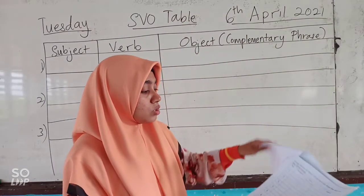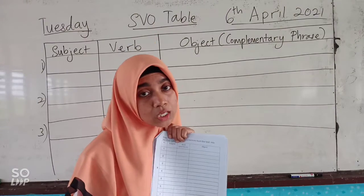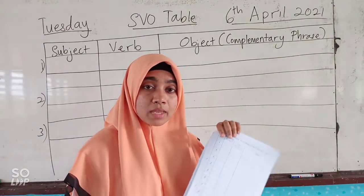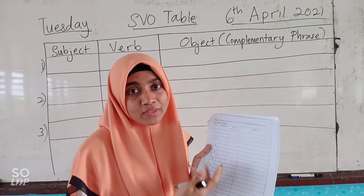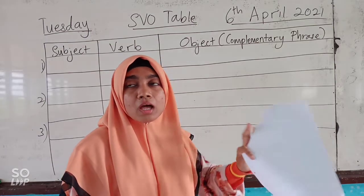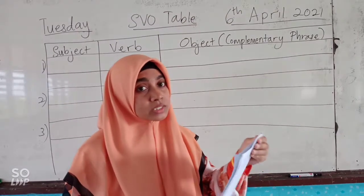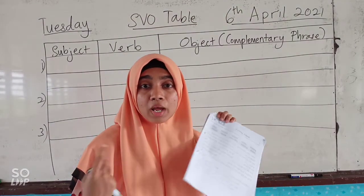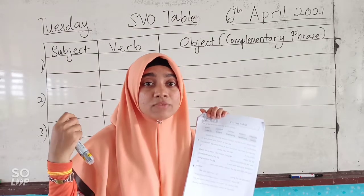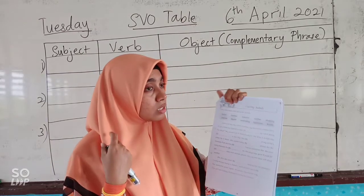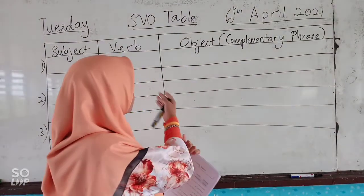You are going to refer to the text and fill in the SBO table with 10 sentences. I am going to model 3 of them first and then you have to come up with another 7. Please don't be scared to try. You have to try first and then learn from errors. If you don't, you won't know the subject, verb and object.